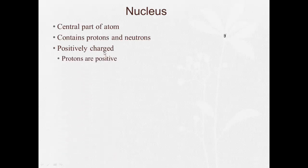Now we're going to take a look at the nucleus. The central part of the atom. If you remember from Rutherford's Gold Foil experiment, he said that the atom consists of a small, dense, positively charged nucleus. Contains protons and neutrons. The nucleus is positively charged. Why is the nucleus positively charged? Because protons are positively charged. And the neutrons are neutral. No charge, zero charge.